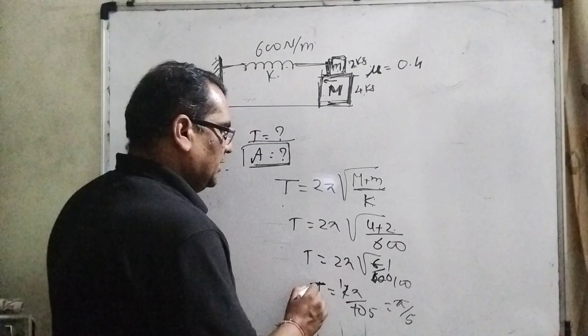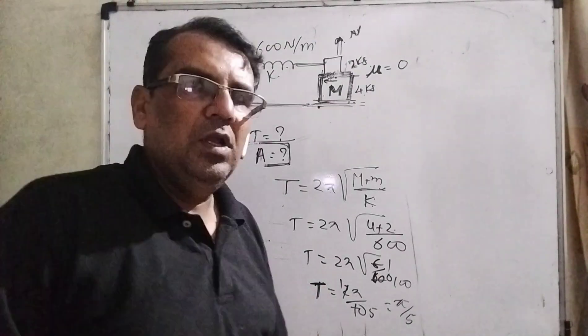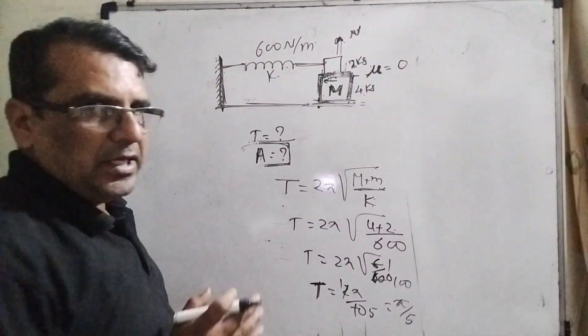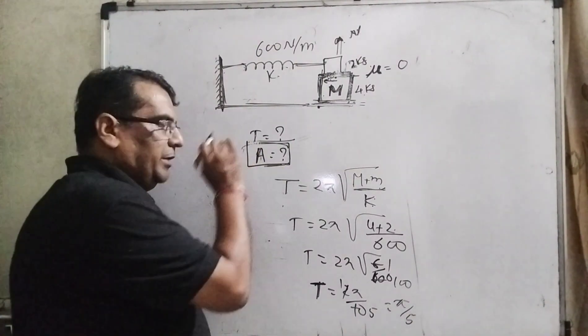So the time period is T = π/5 seconds. Now, the second portion: we have to find out the amplitude.